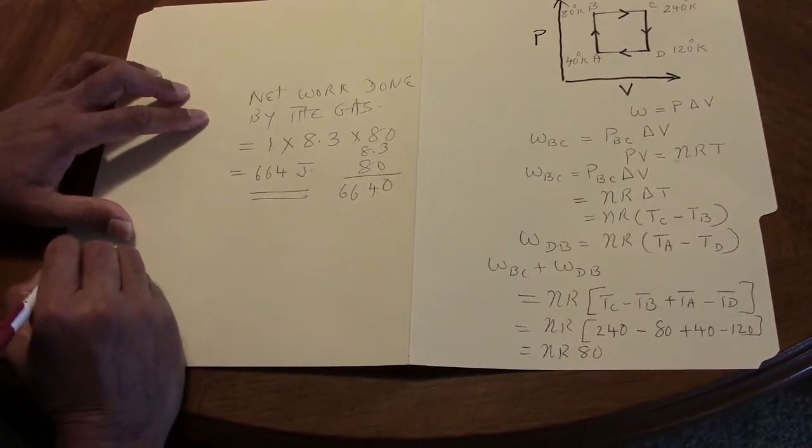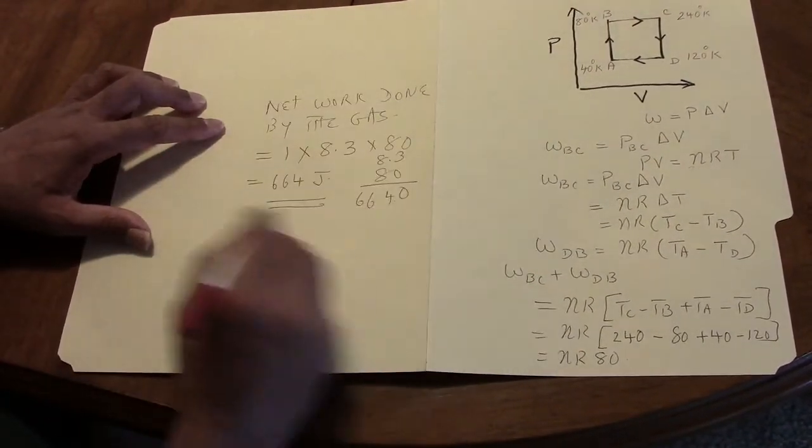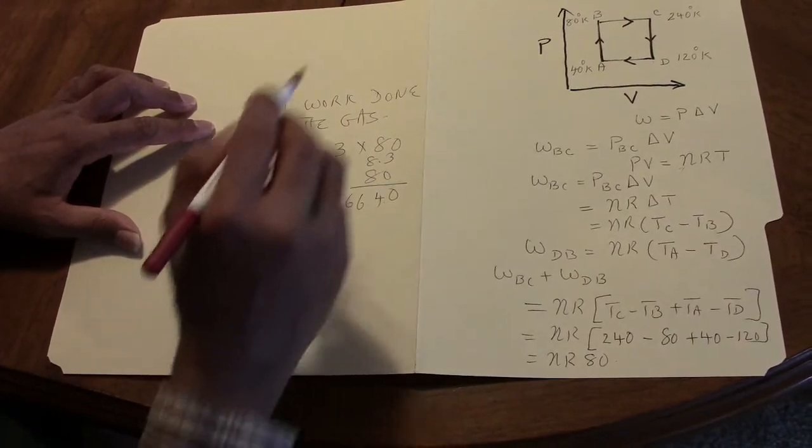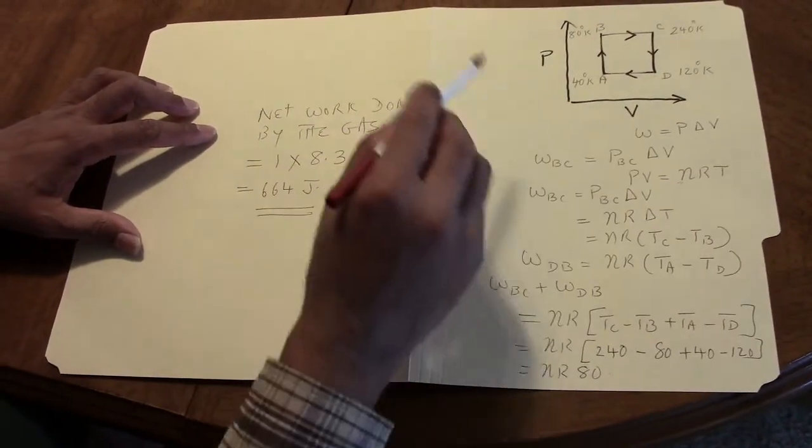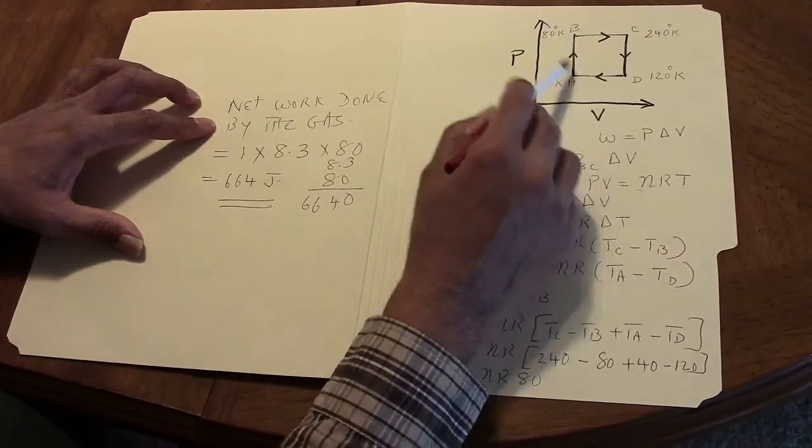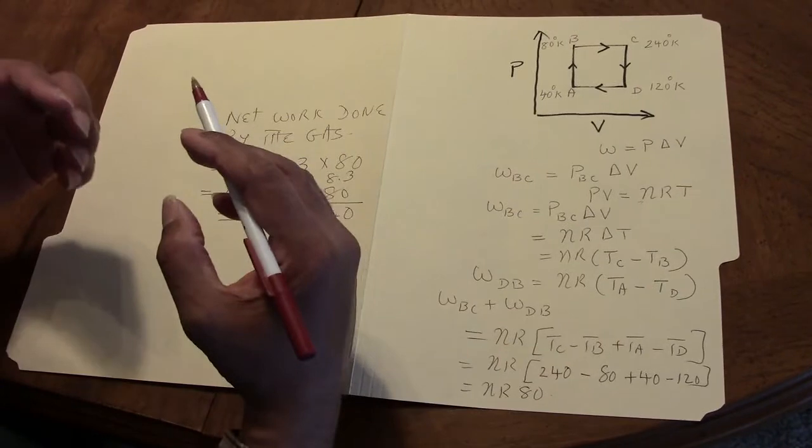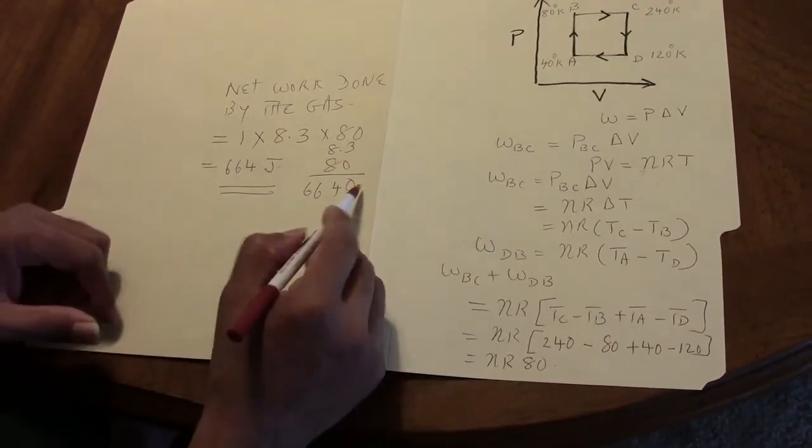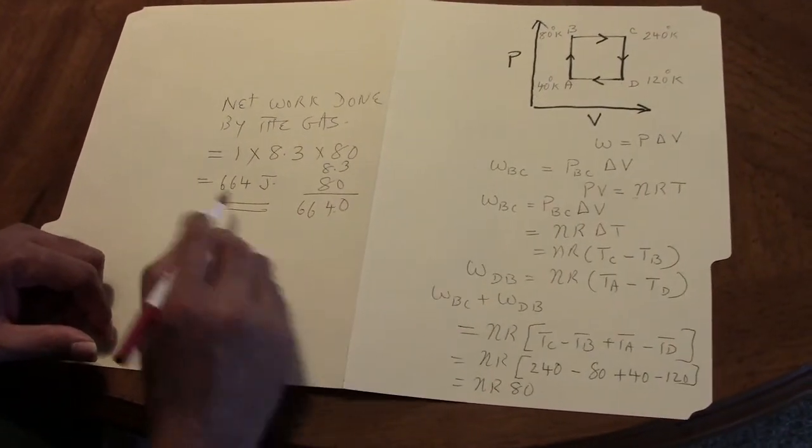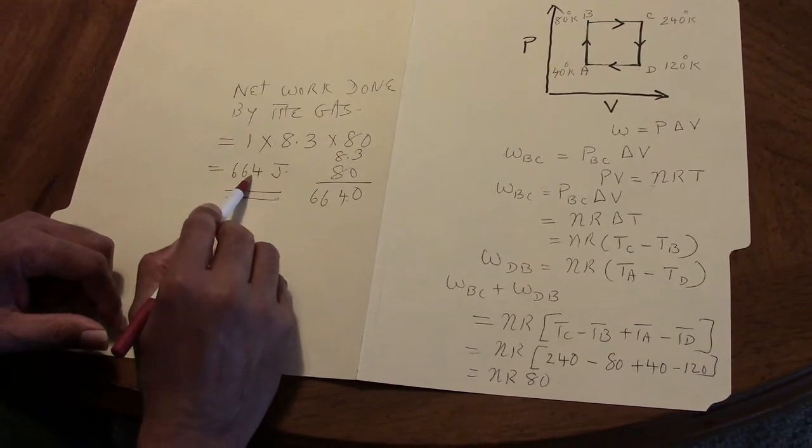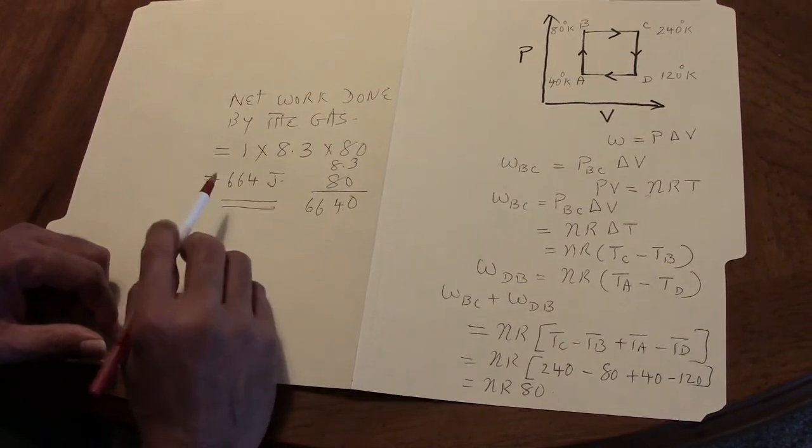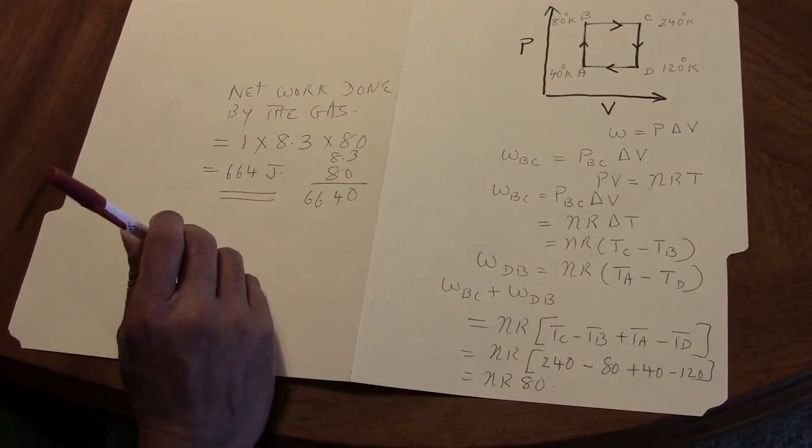So, this would be 664 joules. And there we have the answer. This is the amount of work that is done by the gas in the closed cycle. Of course, in a closed cycle, there is no change in the internal energy of the system but there is work done by the gas which equals 664 joules.